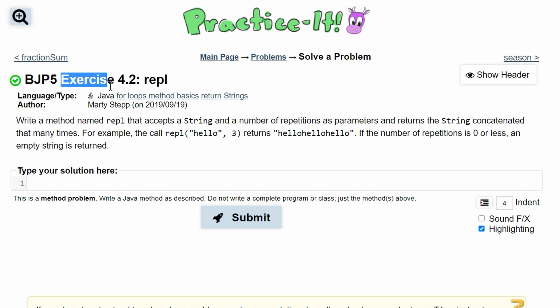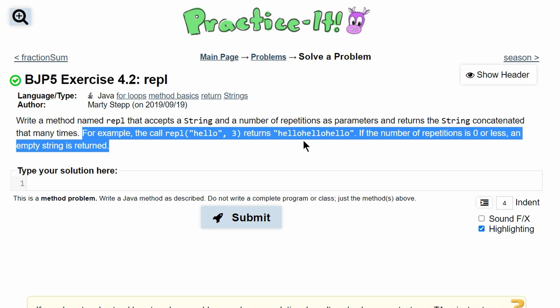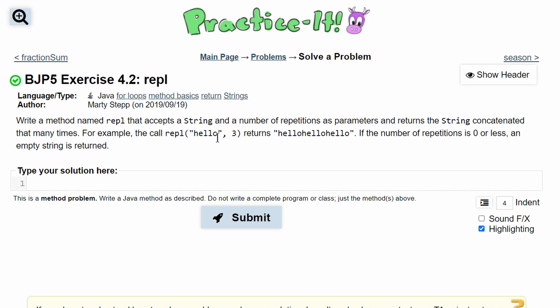In Practice It, Exercise 4.2, Ripple, we were asked to write a method named Ripple that accepts a string and a number of repetitions as a parameter, and then returns the string concatenated that many times. We are given an example of what that output would look like. If our repetitions is 0 or less, an empty string will be returned.